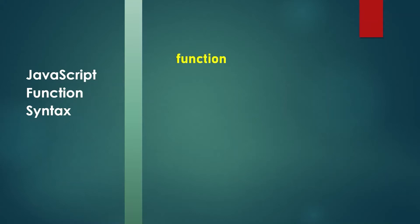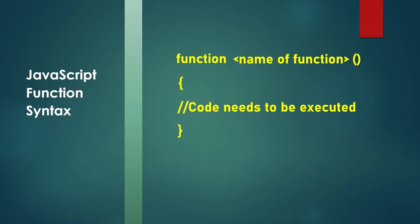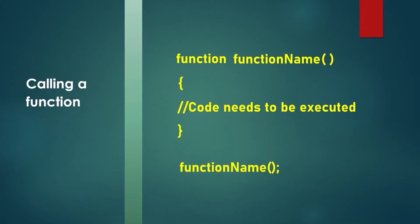Now let's understand the syntax of a function. The JavaScript function is defined with the function keyword, followed by a name — the name of the function — and then parentheses. Then you open curly brackets, and within these curly brackets you put the code you want to execute. It can be any statement or any code you want to run. In the parentheses after the function name you can also have multiple parameters.